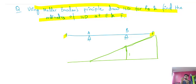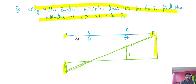The span at B goes upwards, so the E span goes downwards. The span is 2 meters here, 4 meters here, and 3 meters here. We know the unit displacement is 1.